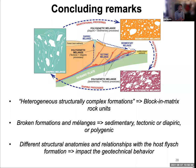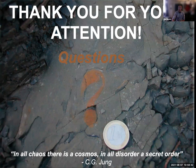To conclude, just a few take-home messages: heterogeneous structurally complex formations are block-in-matrix units. Those block-in-matrix units can be differentiated into broken formation and melange based on mixing and strata disruption, and they can be differentiated into sedimentary, tectonic, diapiric, or polygenetic types. They have different structural anatomies and relationships with the host rock — in this case flysch-type formations — and this may impact the geotechnical behavior. Keeping in mind those simple schemes and applying a case-by-case geological approach to the study of these block-in-matrix units may therefore be beneficial in providing more predictability to the geotechnical characterization of heterogeneous complex formations in associated flysch-type successions. Thank you very much.